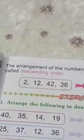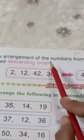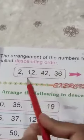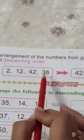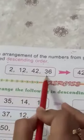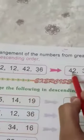Hum numbers ka arrangement kis tarah se arrangement karte hain? Greatest to smallest. To yeh arrangement kya kehlaata hai? Yeh order kya kehlaata hai? Descending order. For example, in this group we have these numbers 2, 12, 42, 36, and these numbers arranged in descending order.